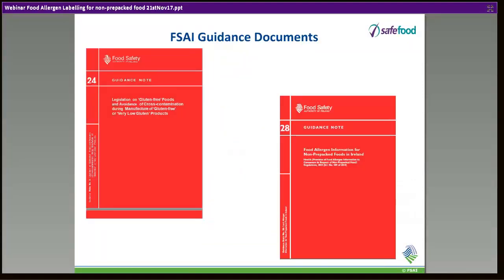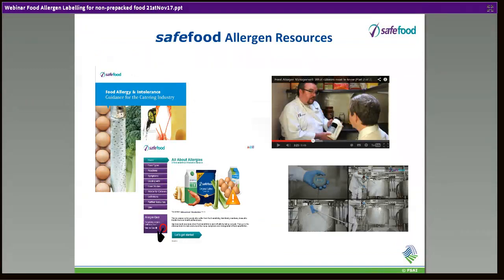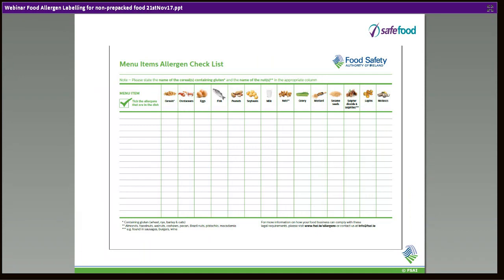There is a lot of guidance on the Food Safety Authority of Ireland website on gluten-free labeling and on allergens in general, as well as SafeFood allergen resources. The FSAI has also put together an allergen checklist that food businesses are finding useful — listing menu items on the left and checking off allergens individually. You can then put that information in a folder or on a pillar somewhere accessible, clearly showing which menu item contains which allergen. These are examples, not the only ways to comply.